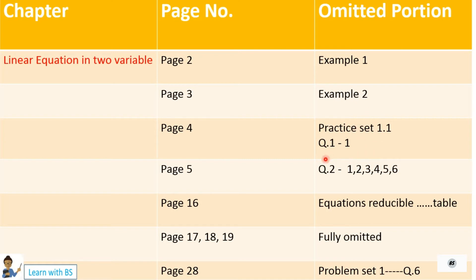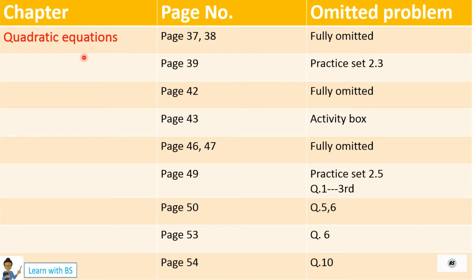Page number 5, Question 2 — sub-questions 1, 2, 3, 4, 5, 6 have been omitted, cut off from the portion. Then page 16, the Equations Reducible table is to be omitted. Pages 17, 18, 19 are fully omitted — whatever is on these pages, you don't have to do anything for exam purposes. Page number 28, Problem Set 1, Question number 6 has been omitted. So these are all the omissions from Chapter: Linear Equations in Two Variables.